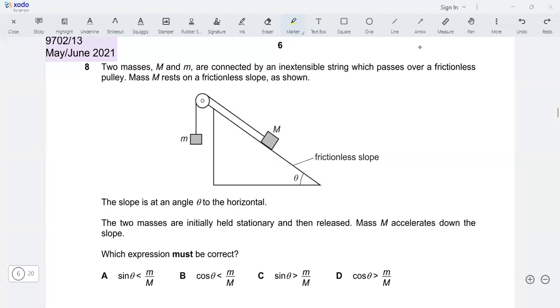Two masses, M and m, capital M and small m, are connected by an inextensible string which passes over a frictionless pulley. Mass m rests on a frictionless slope, as shown. So the pulley and the slope are frictionless, which means no frictional force involved.